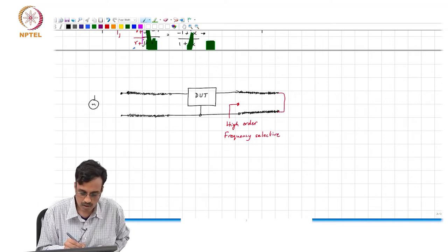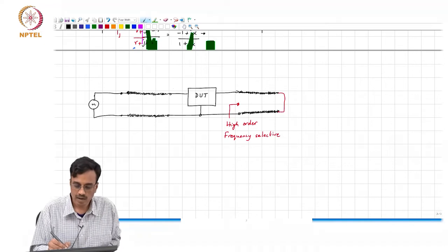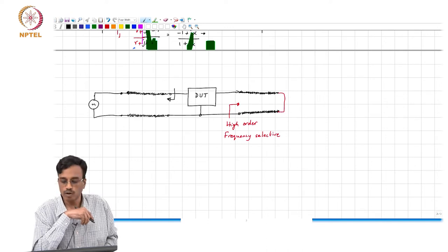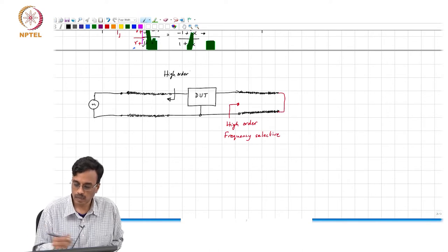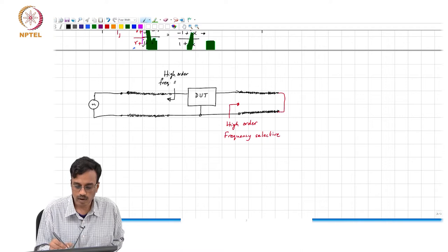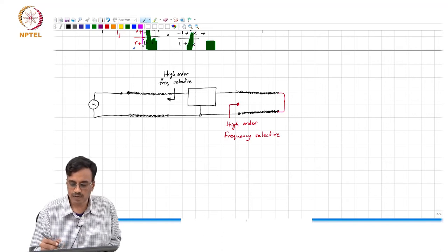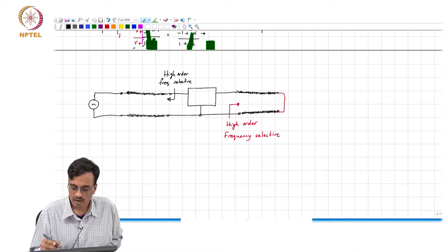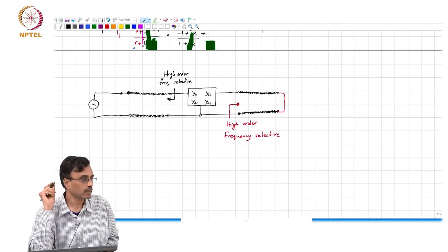The source which needs to be connected here, it also basically, as far as you think that you have a short circuit, but because the length of the transmission line this also looks like a high order frequency selective network. And if the device under test for example, has got some y parameters y11, y12, y21 and y22.